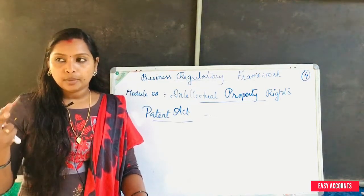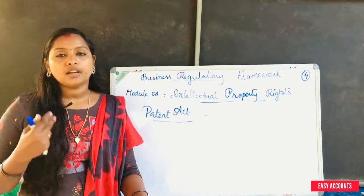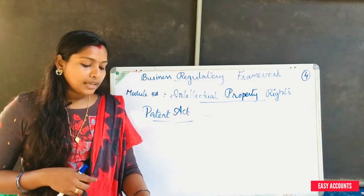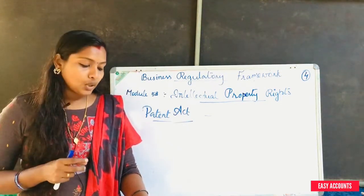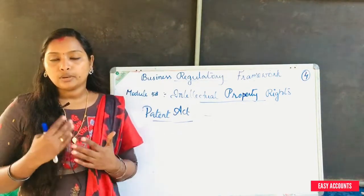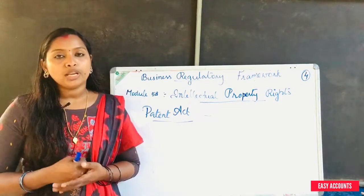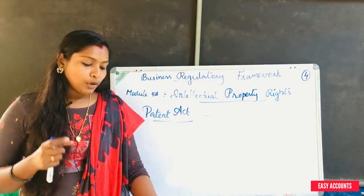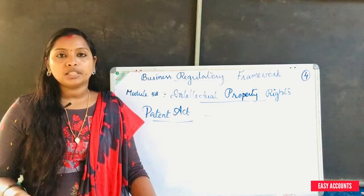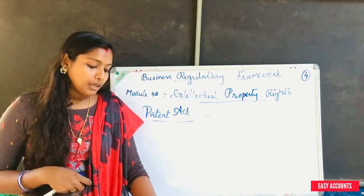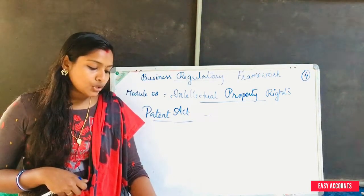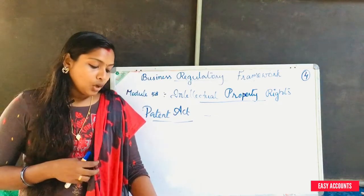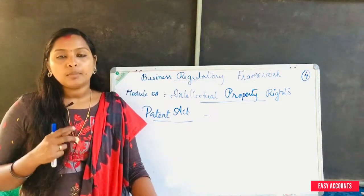The government shall give royalty or fees as per terms agreed upon. If the term is not mutually agreed upon, the government shall give royalty or fees. This is the acquisition of patent by the central government. The central government can acquire an invention or patent by issue of notification for public interest.